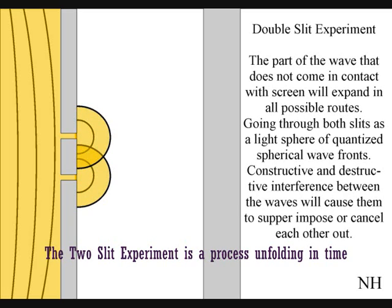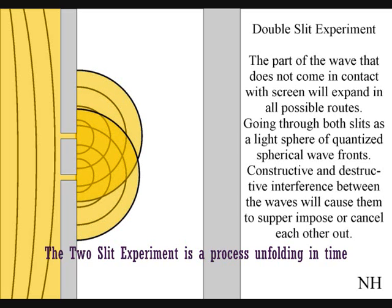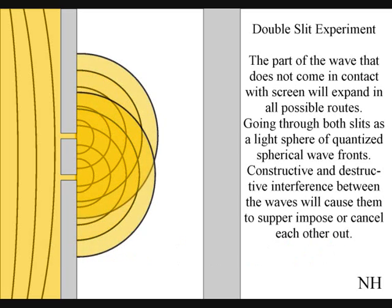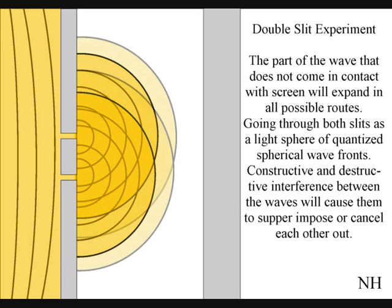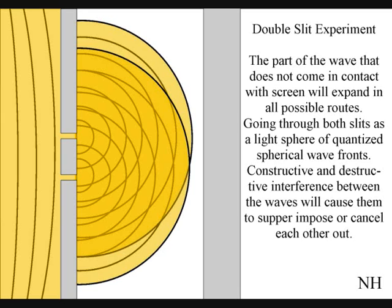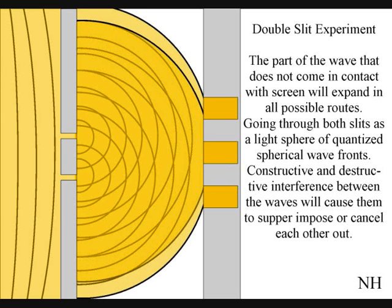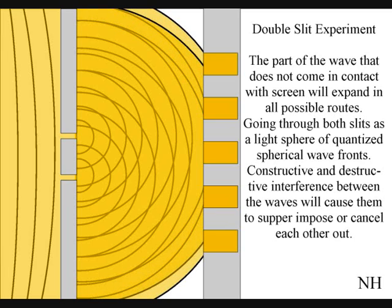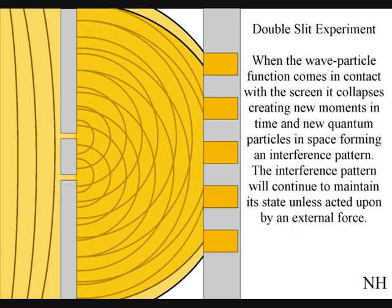The part of the wave that does not come in contact with the screen will expand in all possible routes, going through both slits as two wave-fronts. Interference between the waves will cause them to superimpose or cancel each other out. When these waves come in contact with the screen, they will collapse, creating quantum particles in space and time in the shape of an interference pattern.